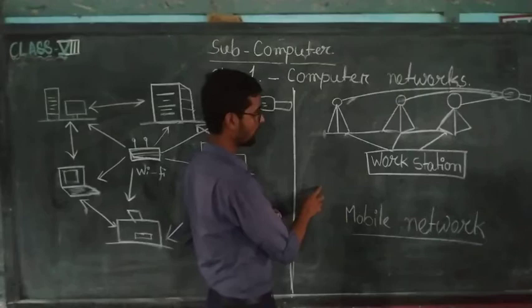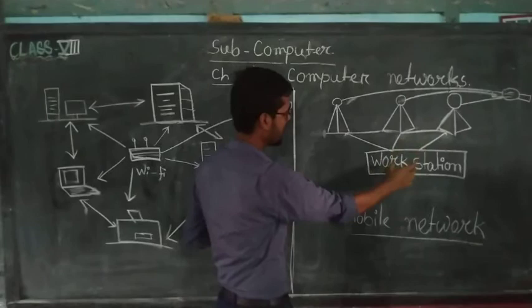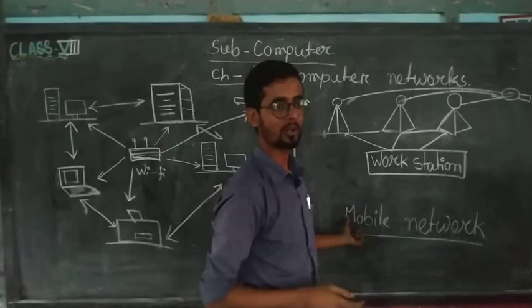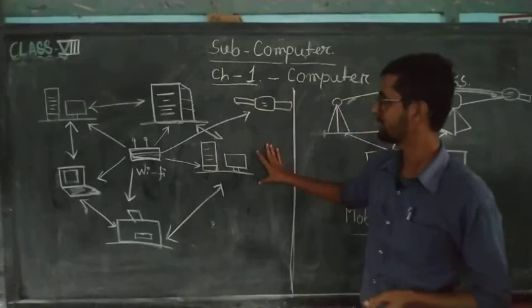Here, what things are there? Our mobile phone, our laptop, then mobile tower, and then satellite, and then work station. These all things are interconnected. That is why it is called mobile network. In the same way, the computer network is also the same here. You can see here.